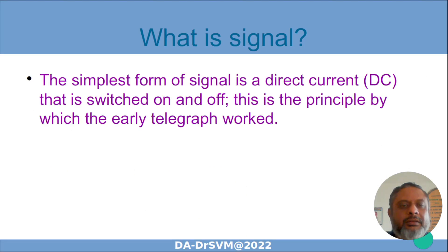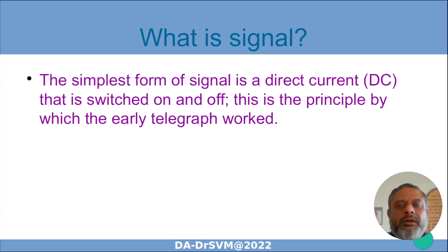The simplest form of a signal is a direct current that is switched on or off. When we are talking about data, this data may be converted into binary form, and the binary zeros and ones can be converted into an electrical signal using a DC and a switch. When the switch is on, current flows; when the switch is off, current does not flow. That's a basic concept used in early telegraph.